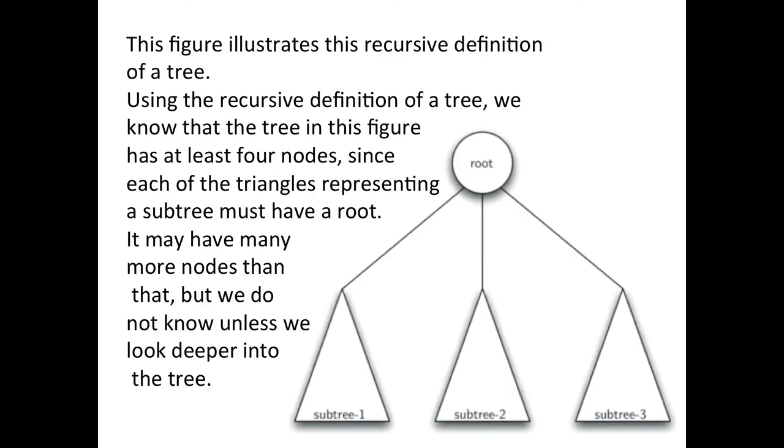So here's a picture of that. So in this tree we know this figure has at least four nodes since each of the triangles representing a subtree must have a root. So we have some implications here that there are at least four nodes. It may have many more nodes than that but we don't know unless we look deeper into the tree.